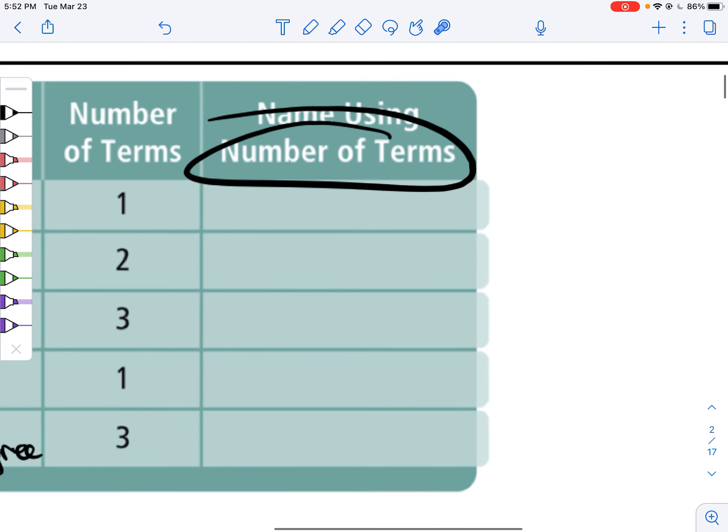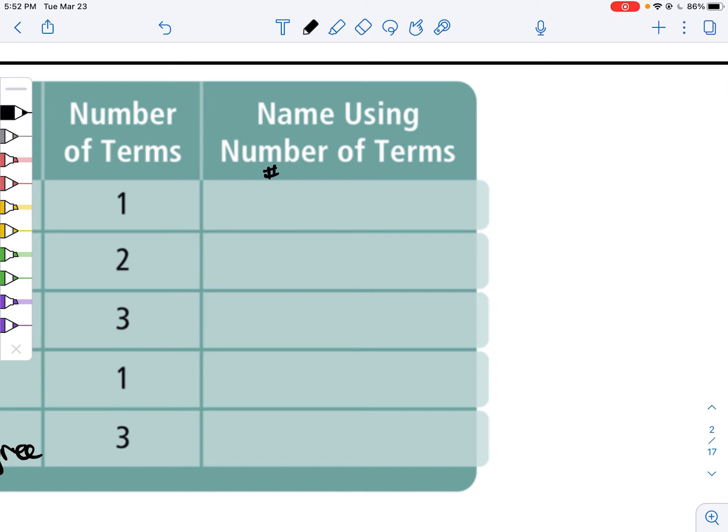We can also classify them by the number of terms. Number is counting how many terms they have. Each term is going to be a monomial. If we only have one, that's a monomial.